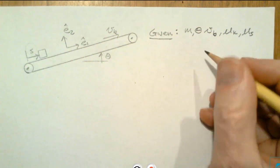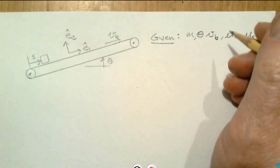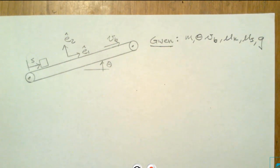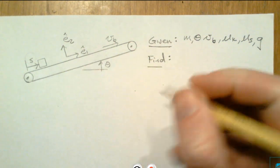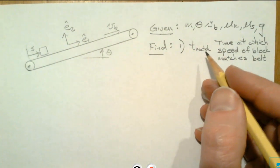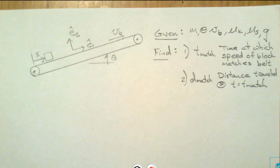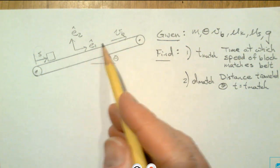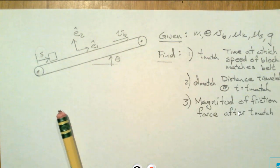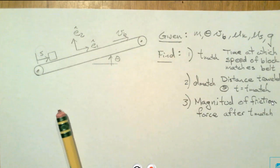Then you list the quantities that are given: mass, angle of the ramp, the coefficients of kinetic and static friction respectively, and G, the gravitational field strength. Then list the quantities you want to find. The first is t-match — the time at which the speed of the block matches the speed of the belt. The second is d-match — the distance the block has traveled at the instant the speed matches. And finally, the magnitude of the friction force between the block and the belt after that matching instant.